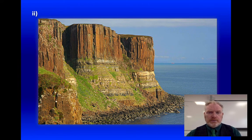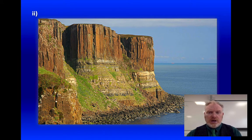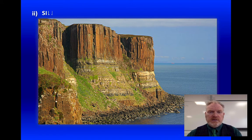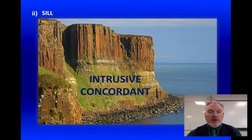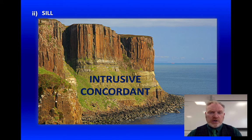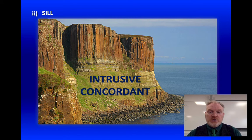Number two — the igneous rock here has got these vertical structures in it, more about those in a later lesson. We can see the sedimentary rock near the bottom of this cliff, creating those layers. This is a sill. It's a sill because, again, it's intrusive — but this one is concordant. The bottom of this darker coloured igneous rock is parallel to the bedding.